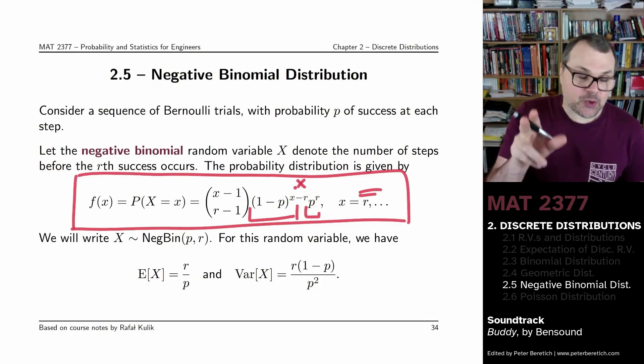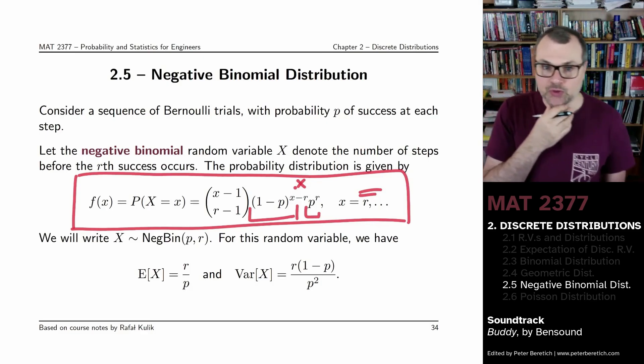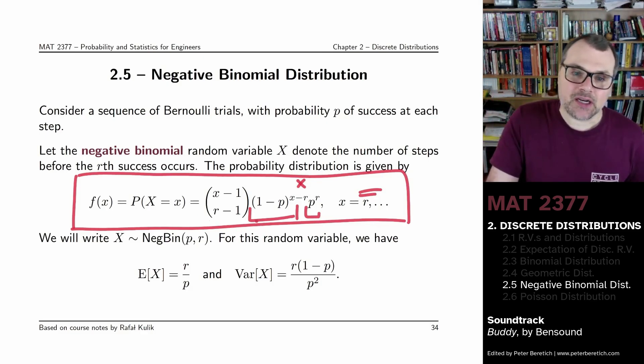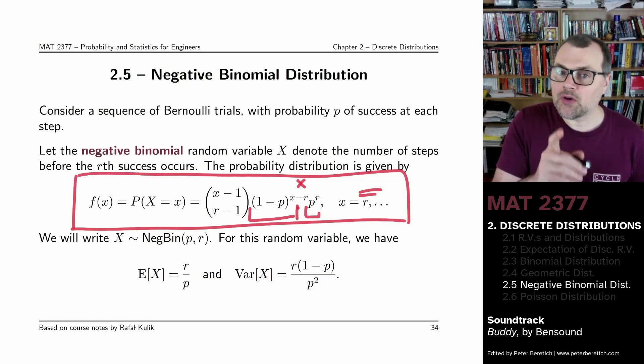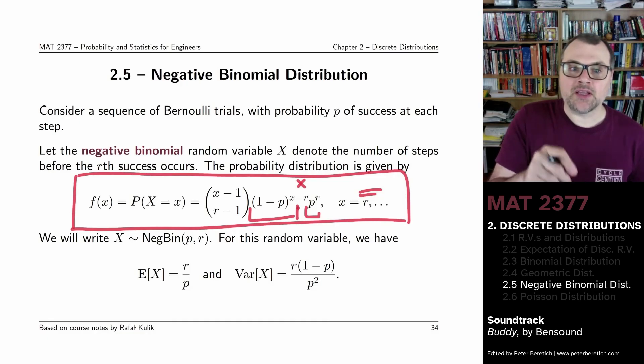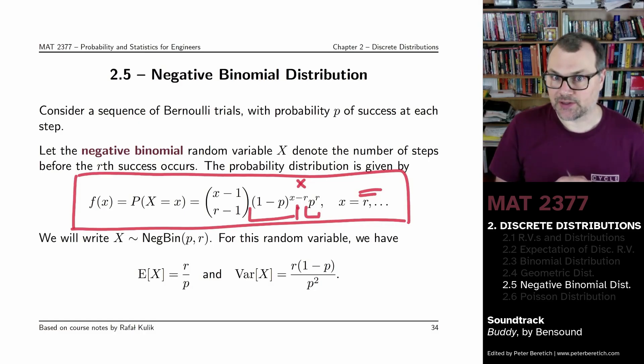And now there is one difference with the geometric distribution, is we do not necessarily know in which order the failures and the successes have occurred. The only thing that we know is that on the Xth throw, it's got to be a success.